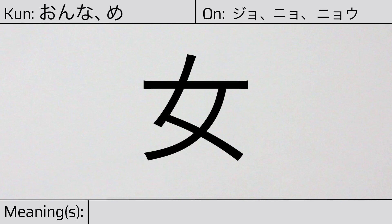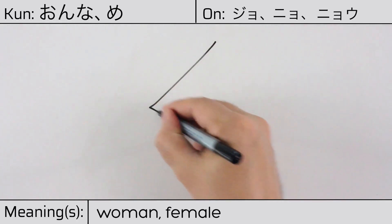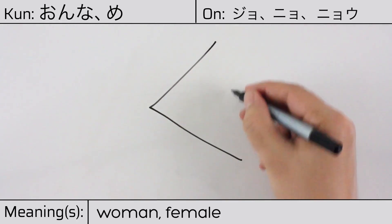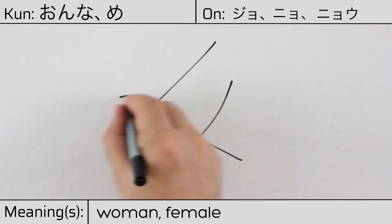This character has the meanings woman or female. Here is the stroke order: ichi, ni, san.